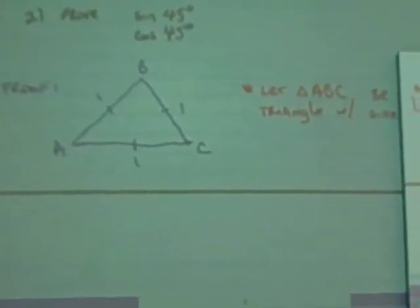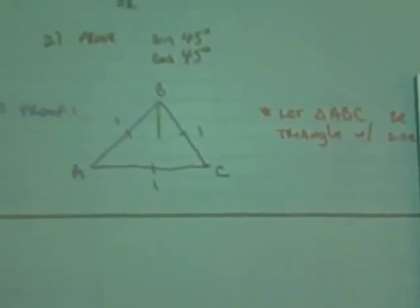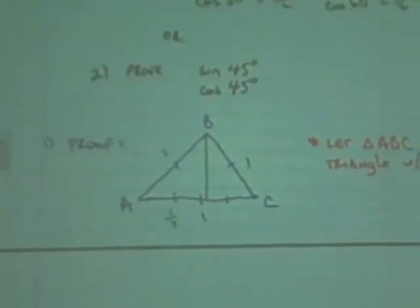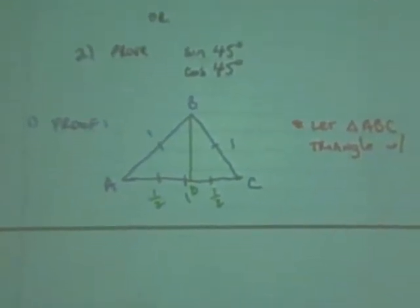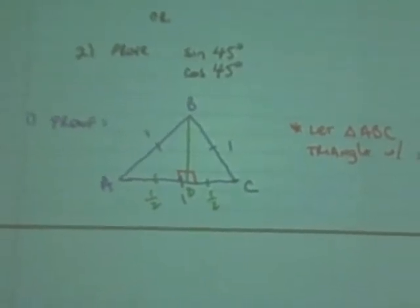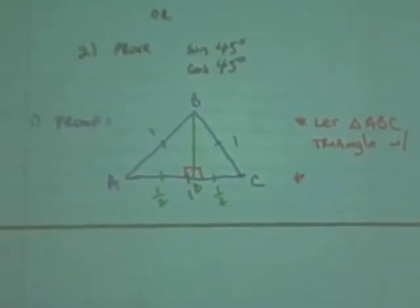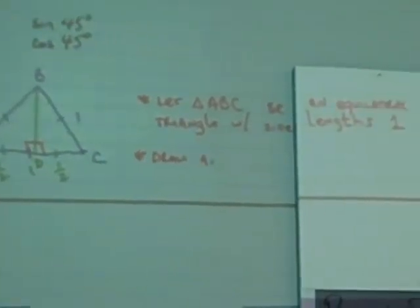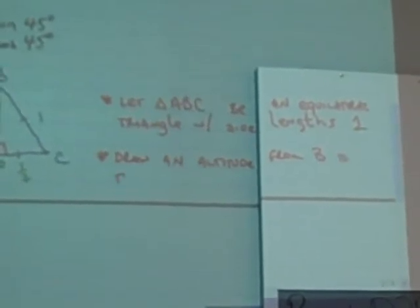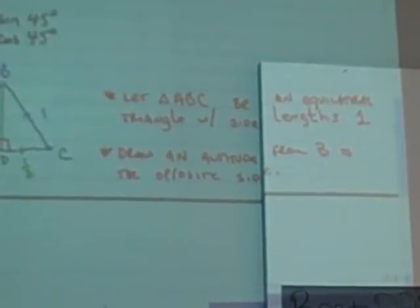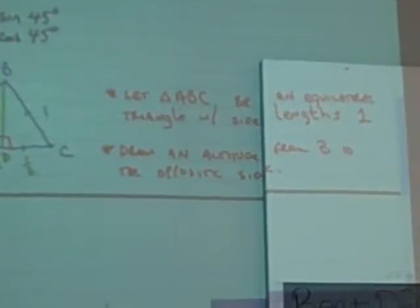Anybody remember what we're going to do next? Alright. The next thing I'm going to do is draw an altitude from B to the opposite side. In an equilateral triangle, an altitude bisects the opposite side. Okay? So that makes two smaller triangles.